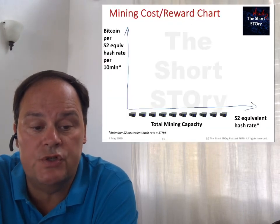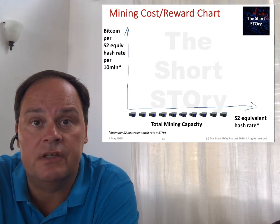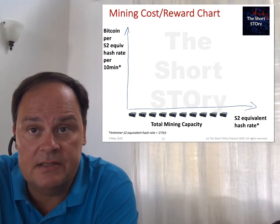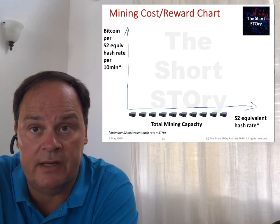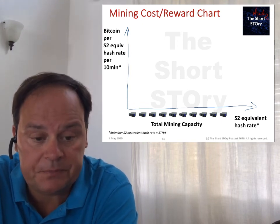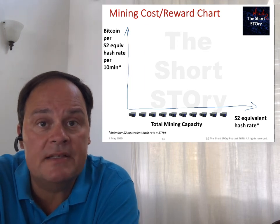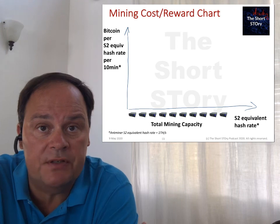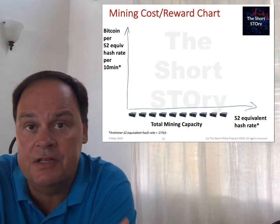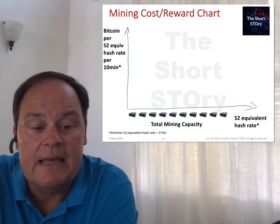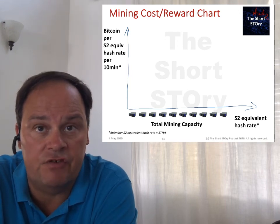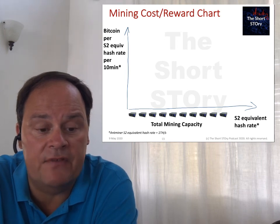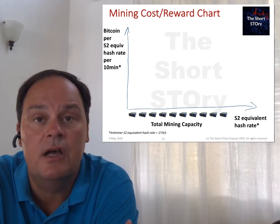The mining cost-reward chart is similar to the supply-demand chart we just saw in microeconomics. On the x-axis is the product volume — here the S2 equivalent hash rate, because this is what miners are selling. On the y-axis is the unit price, and because this is a continuous product, the unit is per 10 minutes, 10 minutes being one block time. The price is expressed in Bitcoin, which is the natural unit. So on the y-axis, the price is effectively Bitcoin per S2 equivalent hash rate per 10 minutes.